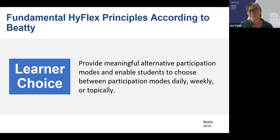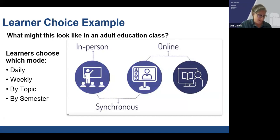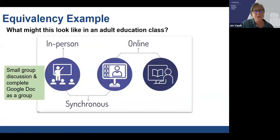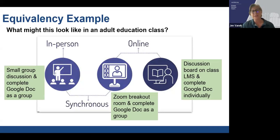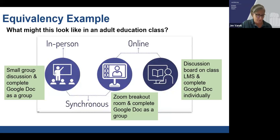To recap the principles: learner choice means providing meaningful alternative participation modes and enabling students to choose whether they want to be in-person or online. With respect to equivalency, students should learn similar things in different ways. For example, in-person learners might do a small group discussion and complete a Google Doc together, while online synchronous learners could be in a Zoom breakout room working on that same Google Doc with the in-person people. And for those who can't make it to class at that specific time, they could use a discussion board and complete the Google Doc individually.